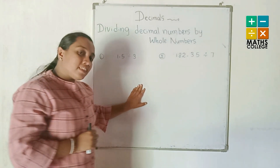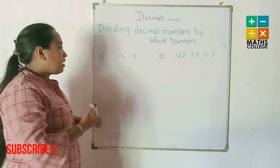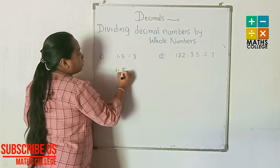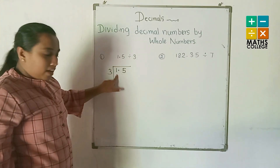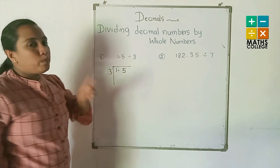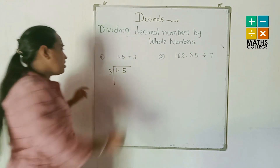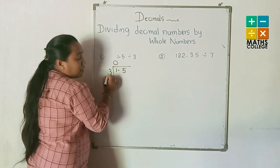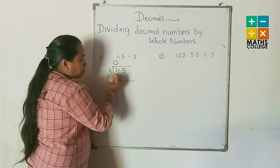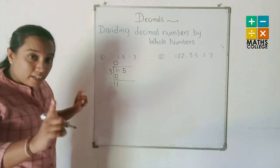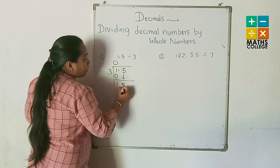We will solve these questions using the long division method. For 1.5 divided by 3, write it out. Consider how many 3s go into 1 — no 3s, so write 0. Zero multiplied by 3 is 0. Subtract: 1 minus 0 equals 1. Then bring down the 5.